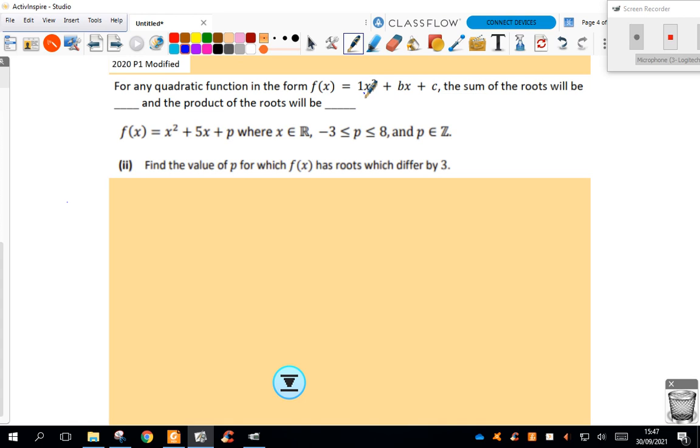The sum of the roots will always be the opposite of the coefficient of x, which would be negative b, and the product of the roots will always be equal to the term independent of x, which is c.